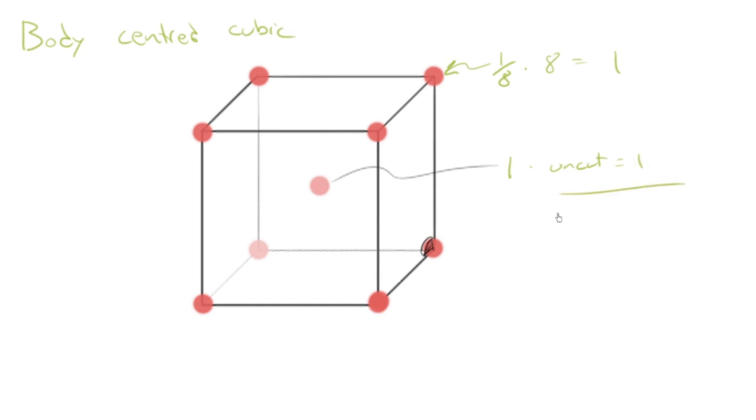And so there are, in total, for the BCC unit cell, two atoms inside the unit cell.